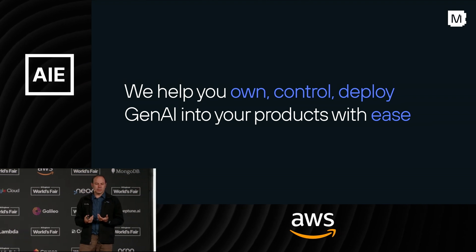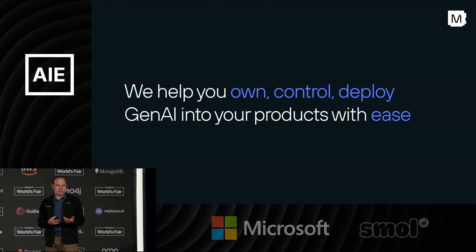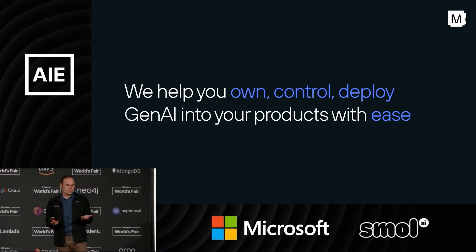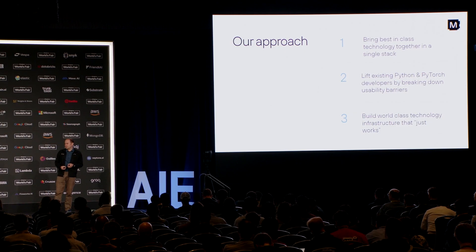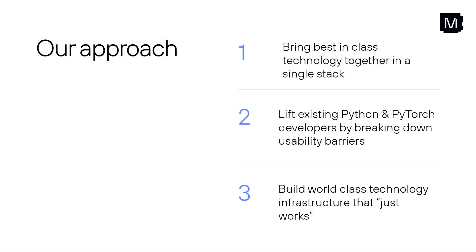Our goal is to make it so you can own your AI, you can own your data, you can control your product, you can deploy where you want to — and make it much easier than current systems work today. What we're doing is really going back to the basics: bringing together the best-in-class technologies into one stack, not one solution per model. Our goal is to lift Python developers and PyTorch users. We're not trying to say ditch everything you know and try something new. We want to gradually give folks new tools so they can have superpowers.